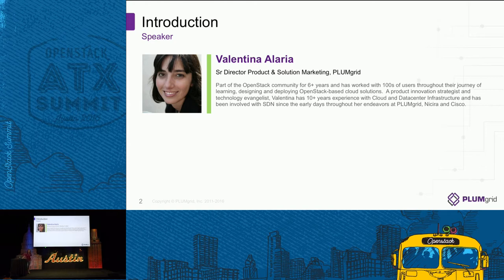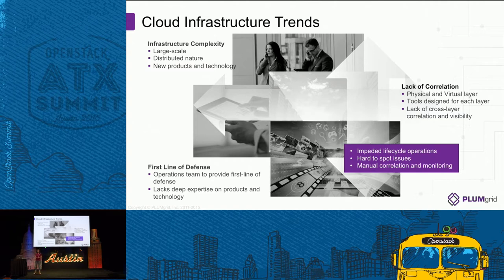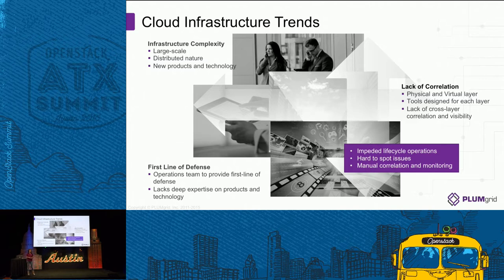Today I want to concentrate primarily on the challenge of operationalizing the networking layer in OpenStack. I want to start from some of the transformation changes we see from an infrastructure perspective and how they've impacted the operational side of the house. Cloud is the driver of this transformation, but all these new products and components obviously bring some complexity, especially from an operational perspective. The first complexity is that we're now operating a large-scale distributed system with a very large number of components.